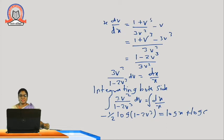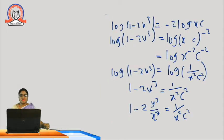Using the separable method, gathering x on one side and v on the other, we get 3v² upon (1 minus 2v³) dv equal to dx by x. Integrating both sides and using substitution t equal to 1 minus 2v³, differentiating and substituting, we get: minus 1/2 log(1 minus 2v³) equal to log x plus log c. Using logarithm properties and cancelling log, the result is 1 minus 2v³ equal to 1/(x²c²). Substituting v equal to y/x, we get 1 minus 2y³/x³ equal to 1/(x²c²).